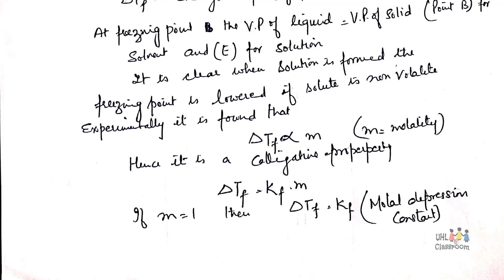Hence it is a colligative property because a colligative property is one which depends only upon the concentration of a substance. If we remove the sign of proportionality, delta Tf is equal to Kf into M. If M is equal to 1, then delta Tf is equal to Kf, where Kf is called as molar depression constant or molar cryoscopic constant. And Kf is the depression in freezing point of one molar solution.